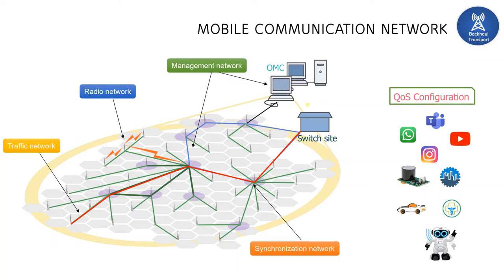And finally, QoS configuration. In modern telecommunication networks, we started sending not only human-to-human traffic, but also human-to-machine, machine-to-human, and machine-to-machine traffic. Every different type of traffic requires a different type of network. Basically there will be one physical network, and on top of this physical network we are building layers of virtual networks — that is called network slicing. QoS parameters play a key role in building this network slicing. So that's all about the mobile communication network overview.